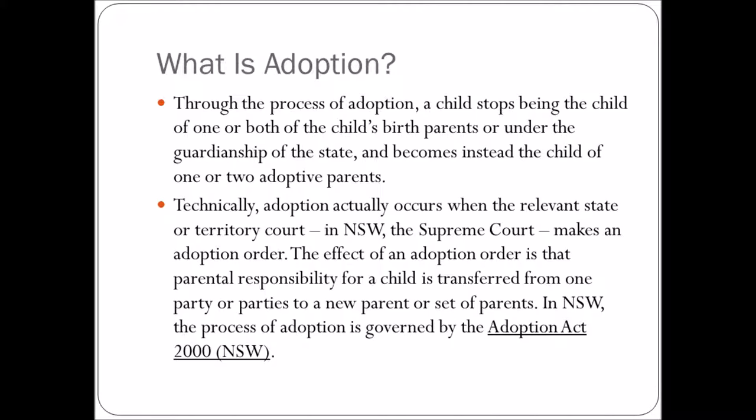The effect of an adoption order is that parental responsibility for a child is transferred from one party or parties to a new parent or set of parents. That means the old set of parents no longer have the same level of responsibility — they're no longer responsible for that child, for making sure they go to school or that they're well fed. They don't have any liability for neglect because they're no longer the legal parent.